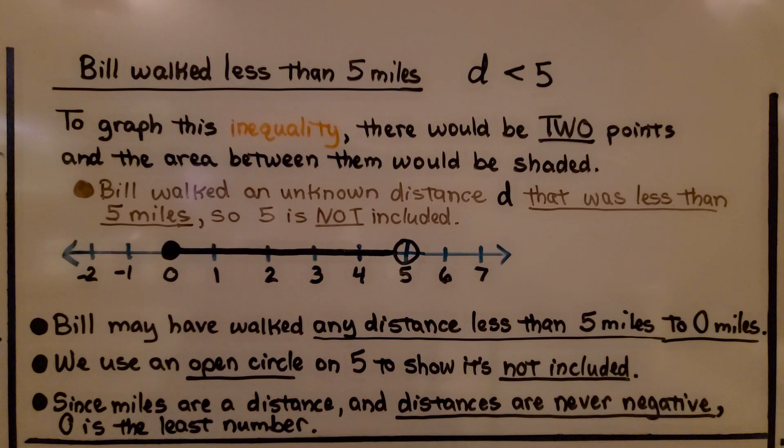We use an open circle on five to show it's not included, and since miles are a distance and distances are never negative, zero is the least number.